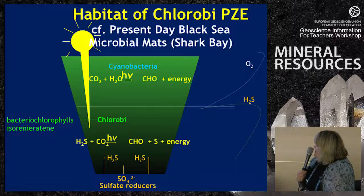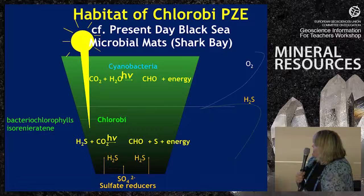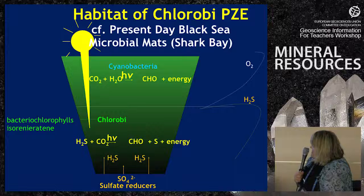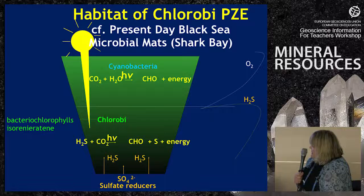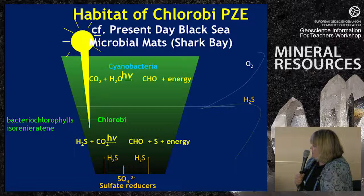Where do these green sulphur bacteria live? They live in the present-day Black Sea. These are called chlorobii. The present-day Black Sea is characterised by a very stratified water column where the bottom waters are completely anoxic and the upper waters are oxic. This is because there's been a significant nutrient input, leading to algal bloom in the upper water column, a decrease in oxygen, and an increase in hydrogen sulphide at a chemocline. The hydrogen sulphide is produced by organic matter deposited with minerals, by sulphate reducers in the sediments or near the sediment-water interface.